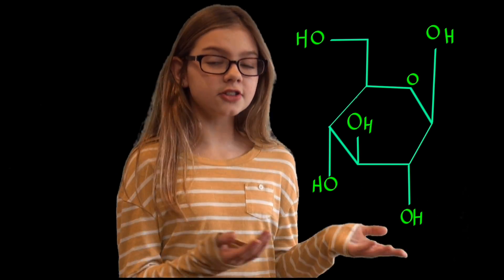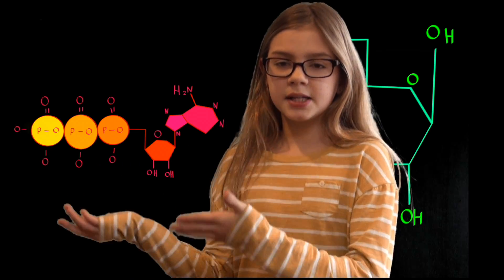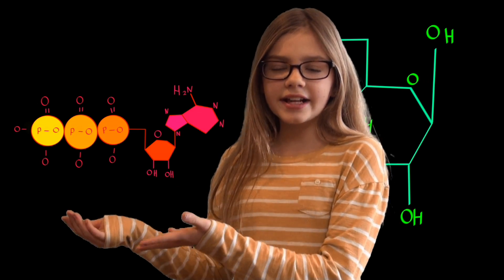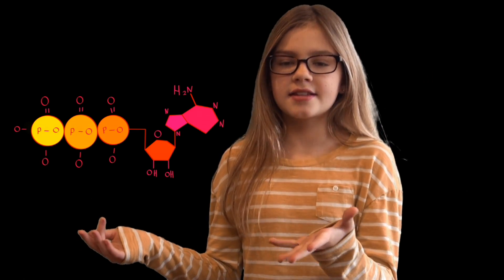Cellular respiration is probably one of the most important processes in biology because it takes glucose and basically turns it into ATP, or adenosine triphosphate. ATP basically works like this: you have the adenosine and then you have these three phosphates sticking off the end of it.